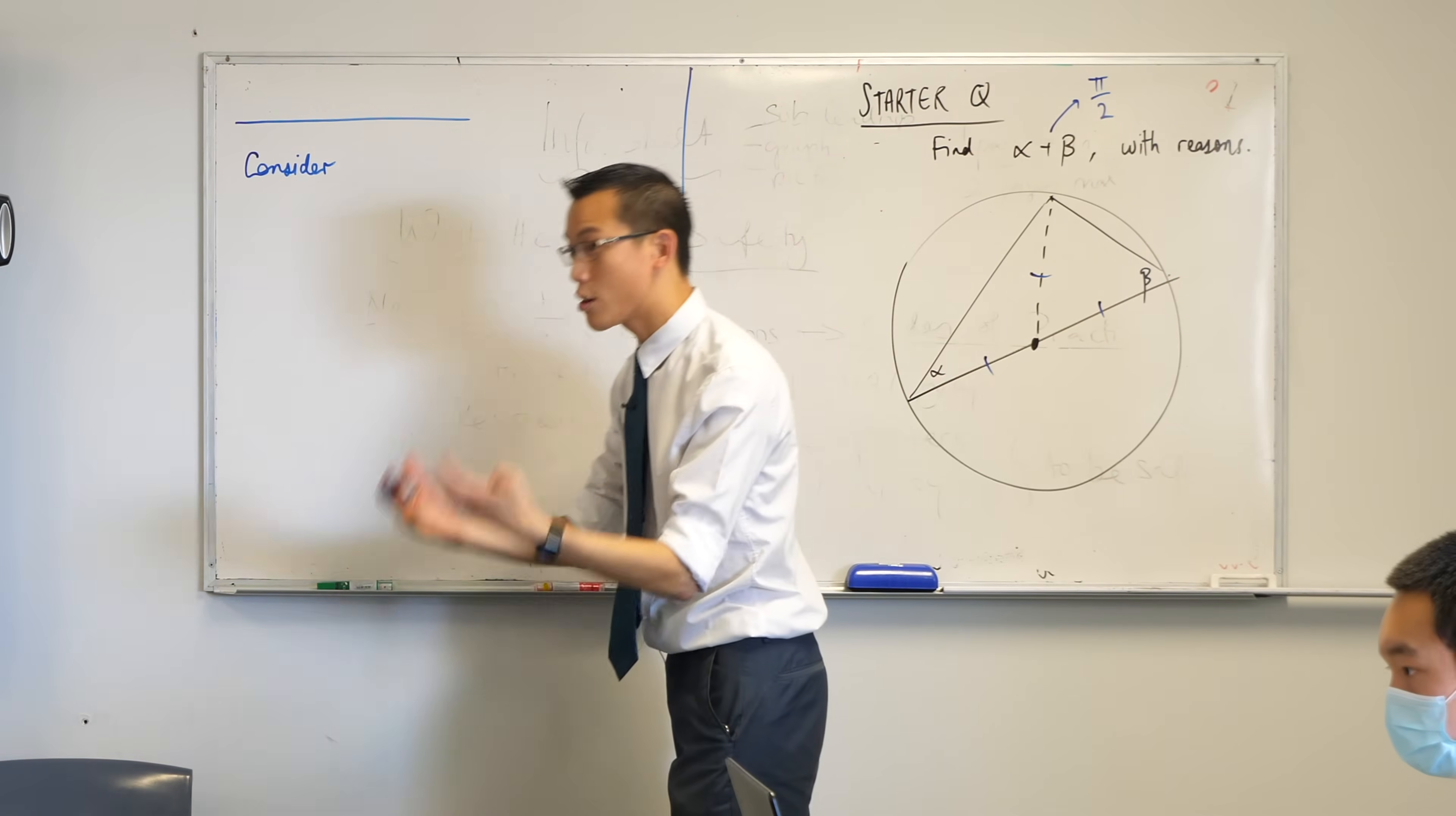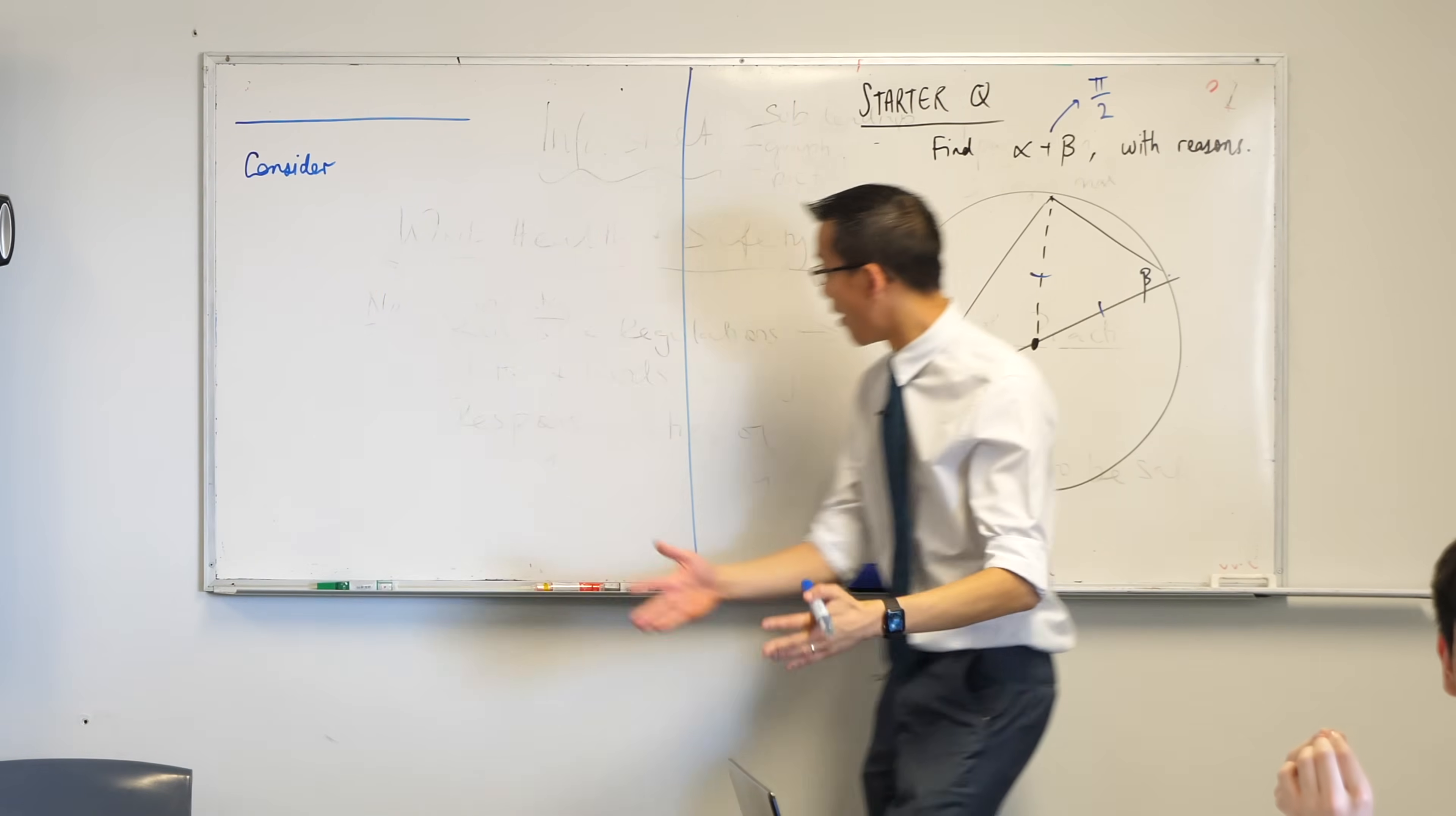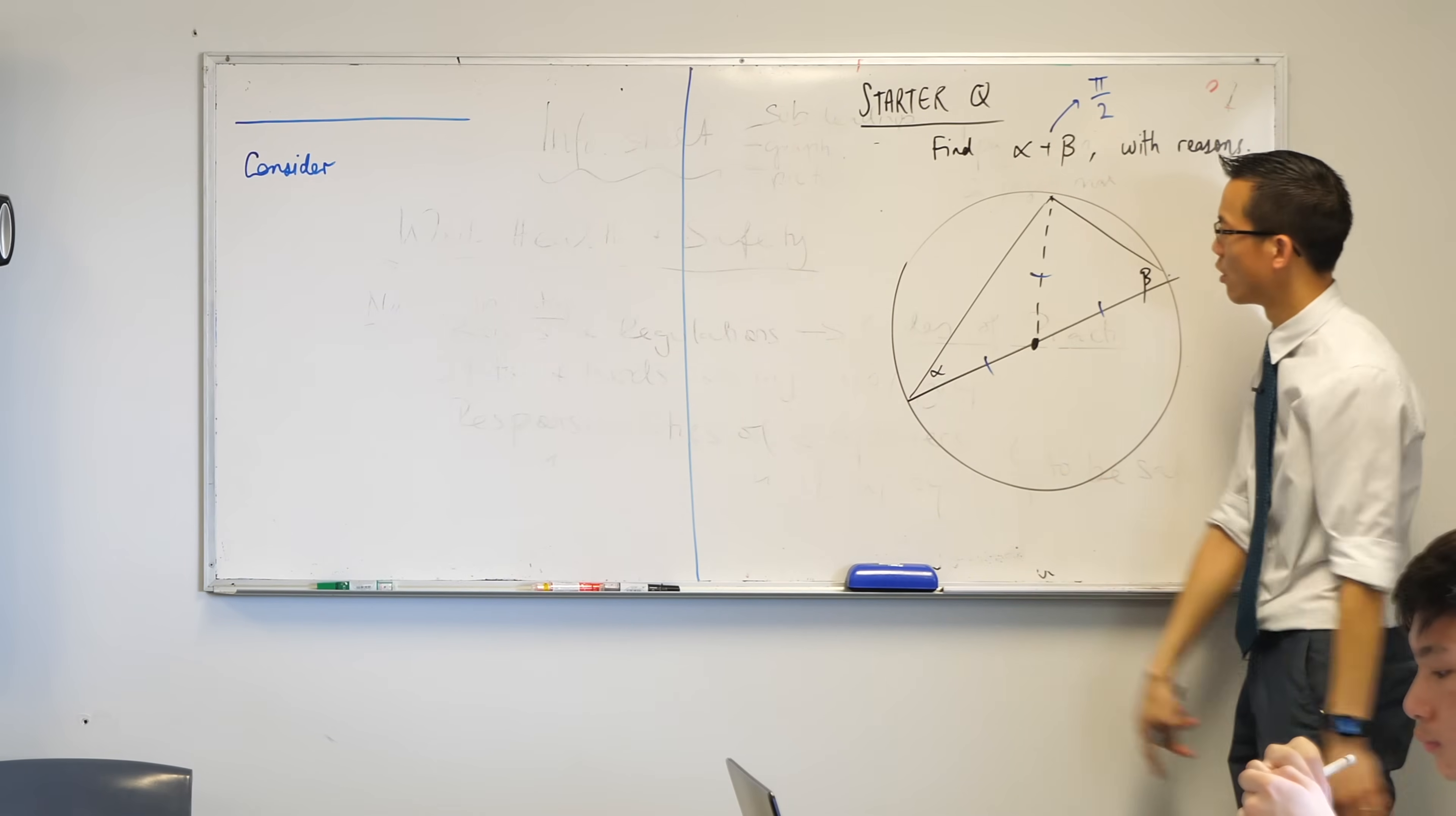Because these are equal radii, the triangles, the sub-triangles inside this triangle, what can you tell me about the triangles? They're isosceles. Thank you. So you've got equal sides here, equal sides here. Equal sides are opposite equal angles. Or you might have said the base angles of an isosceles triangle are equal.